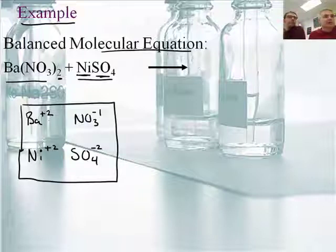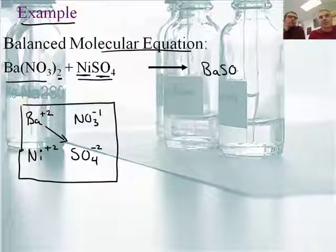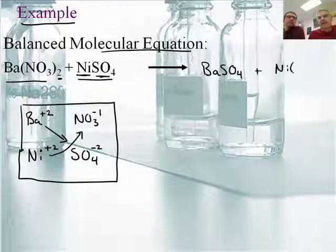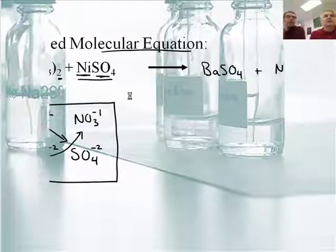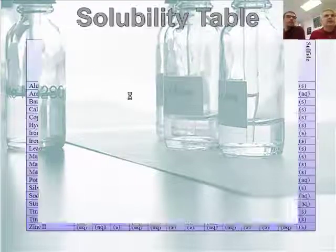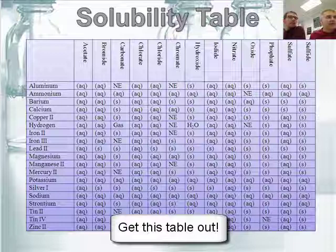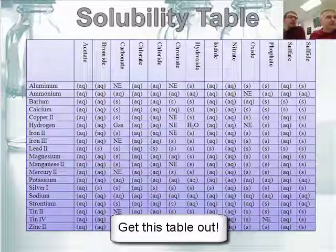Now I'm going to trade partners — just doing what we've already done before. Barium is going to get together with sulfate now, and that's just going to be BaSO4, because it's positive two and negative two. And the nickel is going to get together with the nitrate, and that'll be Ni(NO3)2.